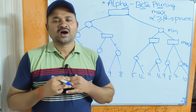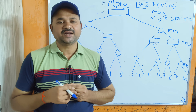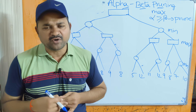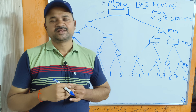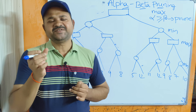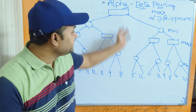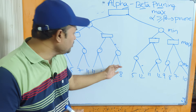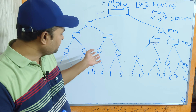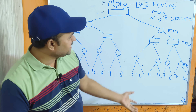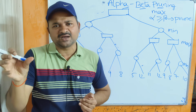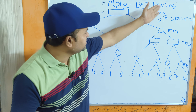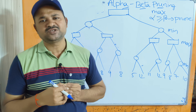Let us discuss the alpha-beta pruning algorithm in artificial intelligence. This algorithm is mainly useful to overcome the drawback of the minimax algorithm. The major drawback of minimax is that it is very slow when the game tree contains a large number of nodes. With alpha-beta pruning, we can prune some nodes or sub-trees from the game tree so there is no need to traverse those pruned nodes, producing a solution faster.